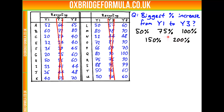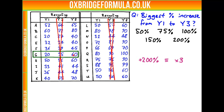So can we spot any 200% increases? We're looking for a country where the year 3 value is exactly 3 times the year 1 value. Going through: in A, 65 is clearly not 3 times 52. It's not the case in B, nor C, nor E, nor F. But in G, we can see in year 1 there were 20,000 tonnes and in year 3, 60,000 tonnes. Indeed, this is an increase of 200%, because 60 is 3 times 20.